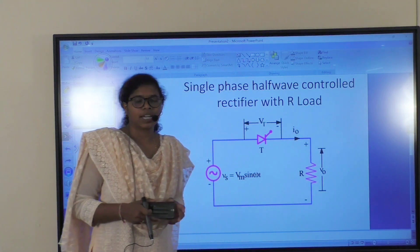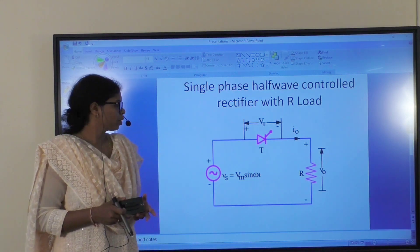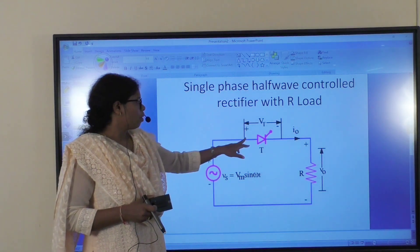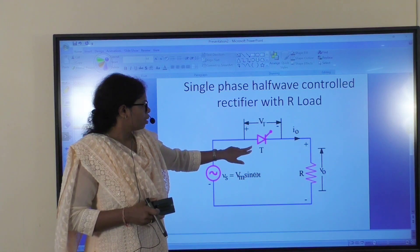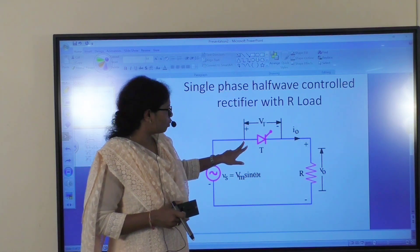When we give the AC source to the node, we get a positive supply at the anode.